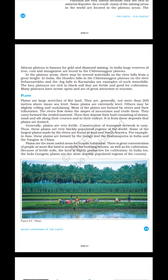Plains are large stretches of flat land. They are generally not more than 200 meters above mean sea level. Some plains are extremely level; others may be slightly rolling and undulating. Most plains are formed by rivers and their tributaries — the rivers flow down the slopes of mountains and erode them. They carry the eroded material and deposit their load consisting of stones, sand and silt along their courses and in their valleys, from which plains are formed. Generally, plains are very fertile and construction of transport networks is easy.